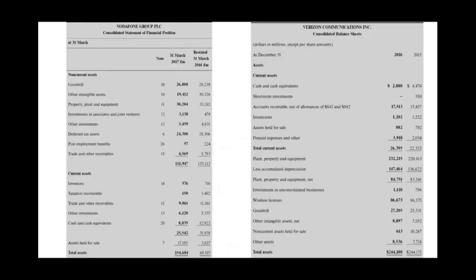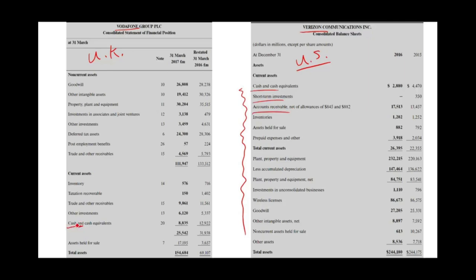Before we look at the reasons for accounting diversity, let's take a look at actual diversity to see what it looks like. Let's inspect Vodafone, which is a UK company, versus Verizon, which is a US company — looking at their balance sheets. In the US, we prepare the balance sheet in order of liquidity: cash comes first, then short-term investments, then accounts receivable. In the UK, cash is at the bottom of the asset section, then other investments, then trade receivable — liquidity is in reverse.